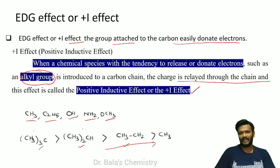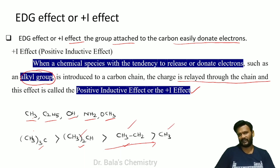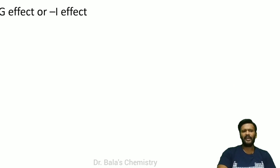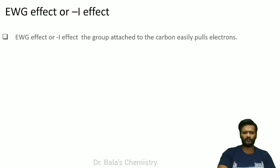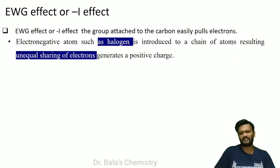There is more +I effect in some groups and less +I effect in others — with a clear order. Now let's go through the minus I effect, or electron withdrawing effect.